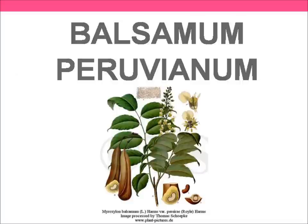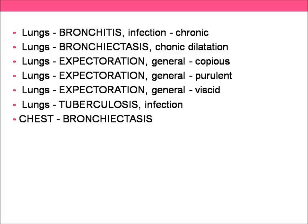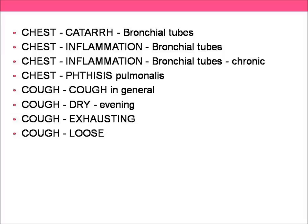Then comes Balsam peru — a marvelous remedy used for many conditions, not only for winter cough and cold. The first and most important feature is a lot of catarrh in the bronchus; with a stethoscope you will get loud rales. Thick, creamy, yellowish sputum. Again night sweats and a tubercular background. But the characteristic thing is irritation in the larynx — a scraping sensation producing a lot of dry cough. X-ray will usually show bronchitis or bronchiectasis. The cough is usually worse in the evening.